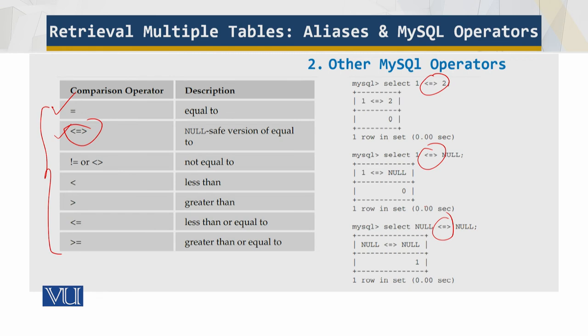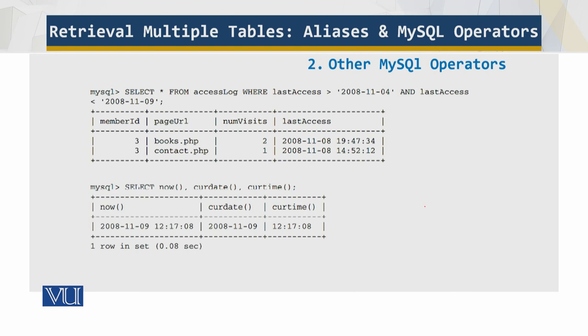Other MySQL operators: you can also use the boolean operators AND, OR, and NOT to build more complex expressions. MySQL functions can be broken down into many categories. For example, there are many date and time functions such as NOW, which retrieves the current date and time. You can also use CURRENT_DATE to retrieve just the date portion and CURRENT_TIME to get just the time portion.